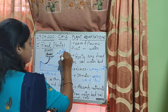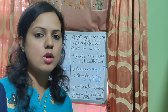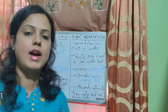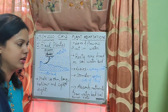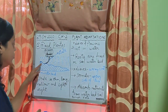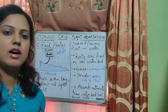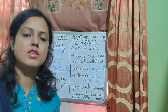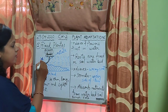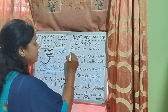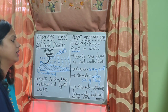Why are they called stalks? Because the stems are thin, long, hollow and light in weight — and such stems are called stalks. Now, regarding roots: roots are fixed in the soil of the water bed, just like emergent plants. Leaves and flowers — they float in water. Float matlab tairna, so the flowers and leaves float on the water surface.